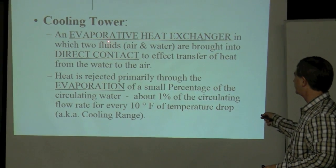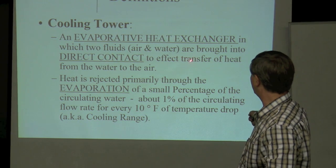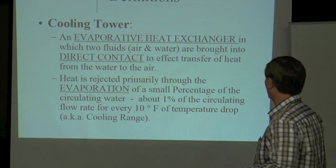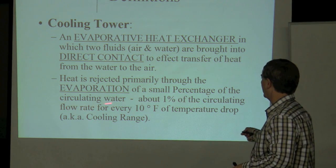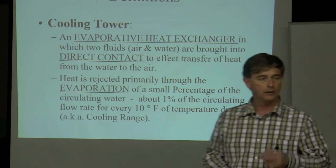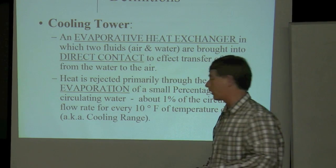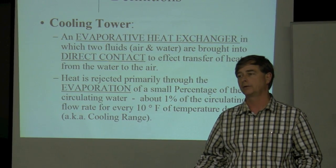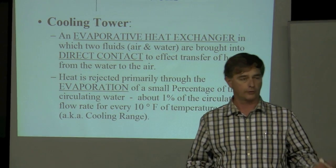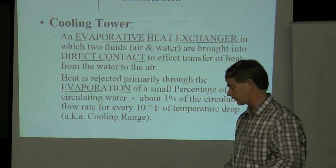Definitions: you're mixing air and water, bringing them into direct contact to transfer the heat from the water to the air, and it does that through evaporation. You will have some water loss — about 1% water loss through evaporation for every 10 degrees of temperature drop. Typically in our industry, cooling towers have a 10-degree delta T, so rule of thumb, you're going to lose about 1% through evaporation while circulating the water.